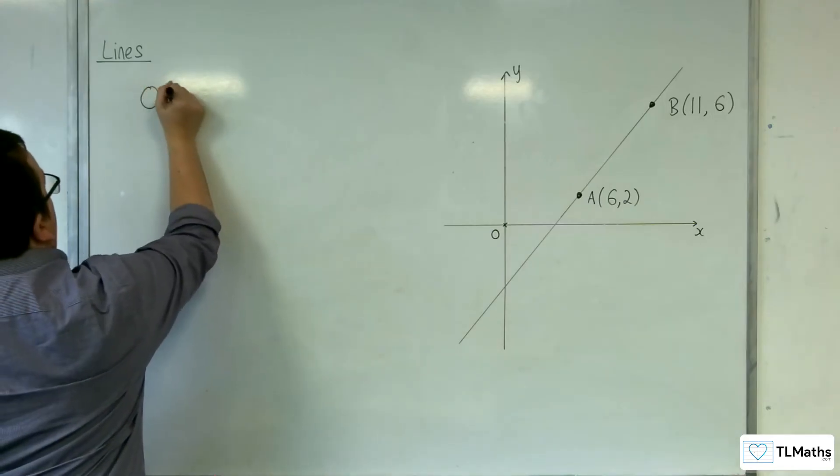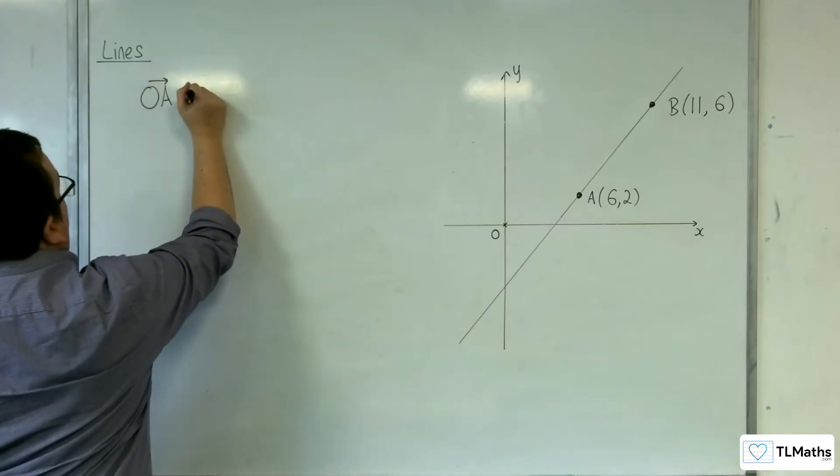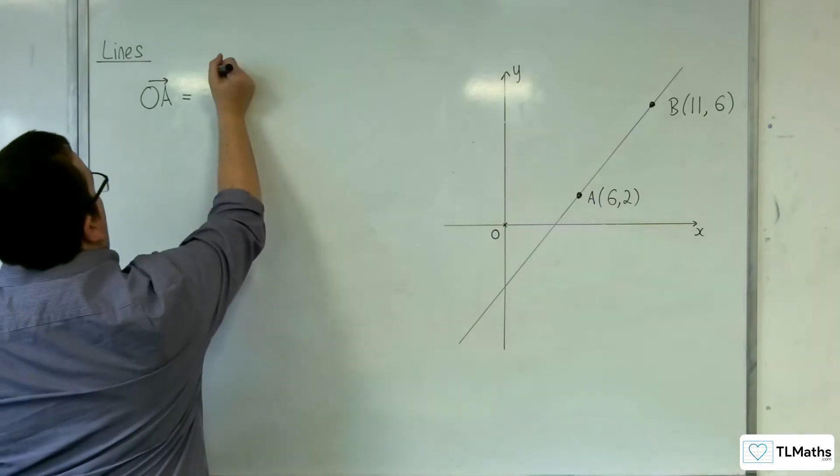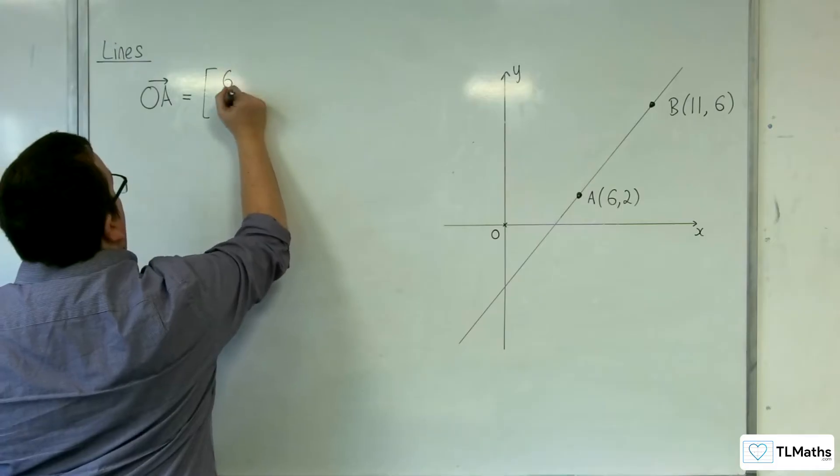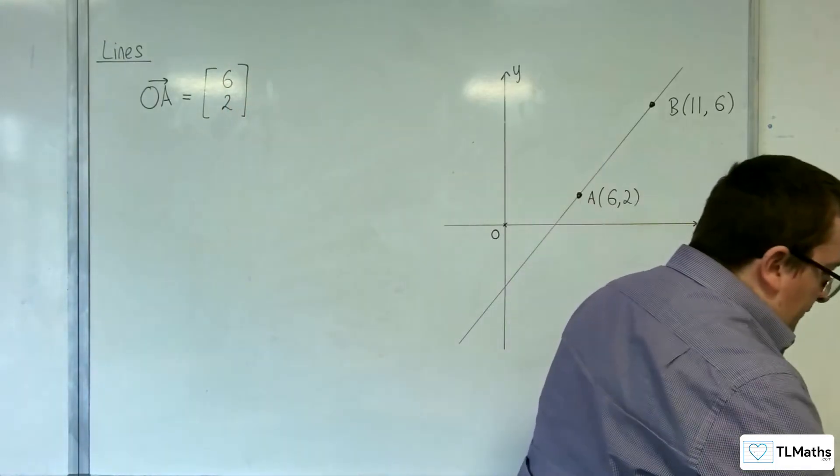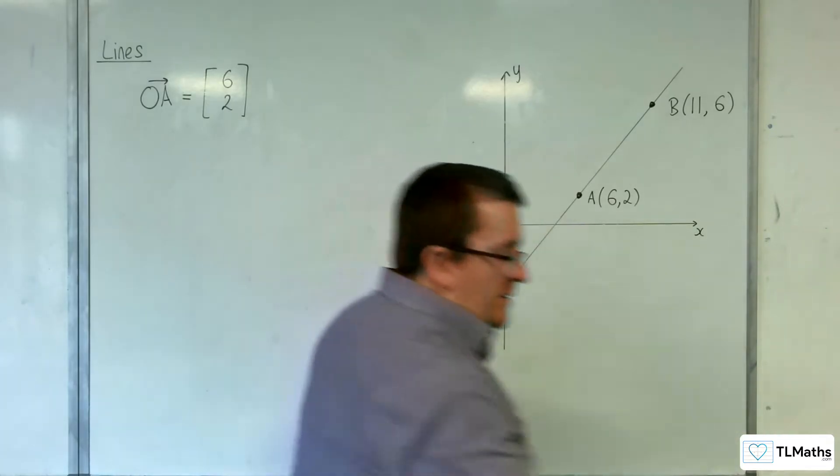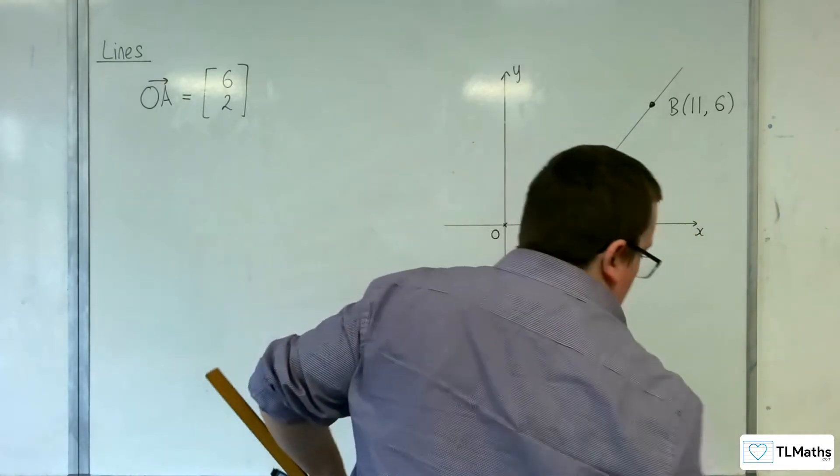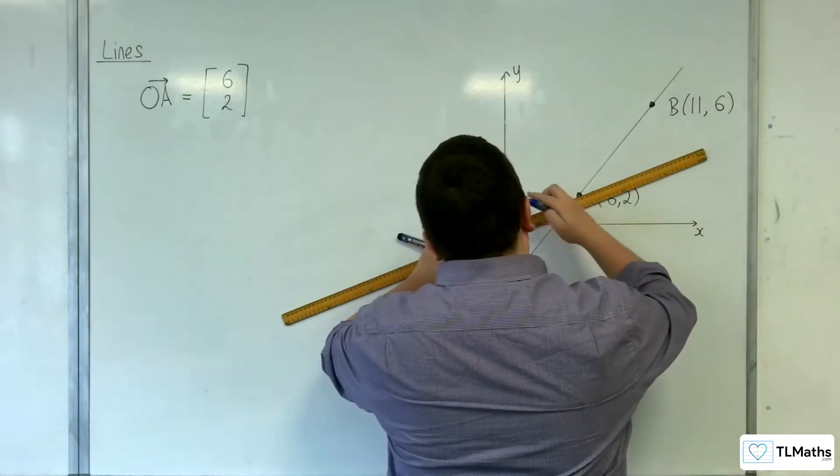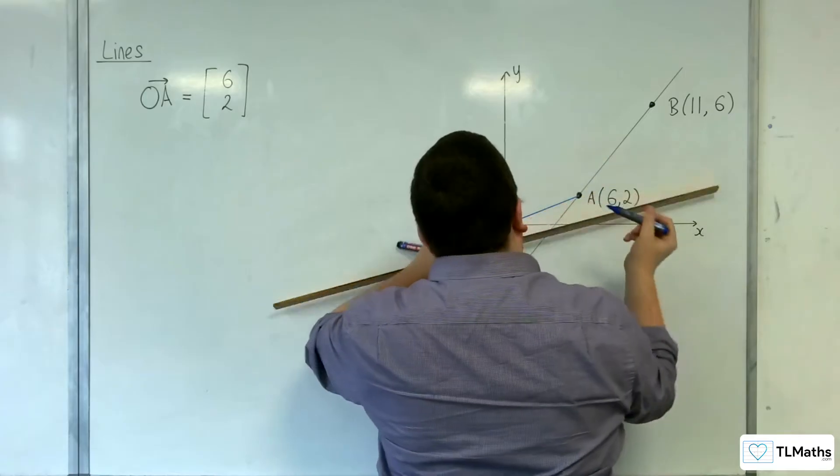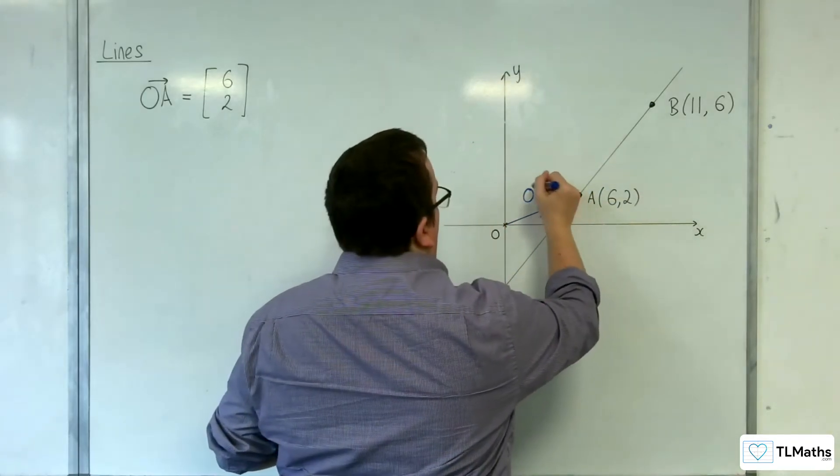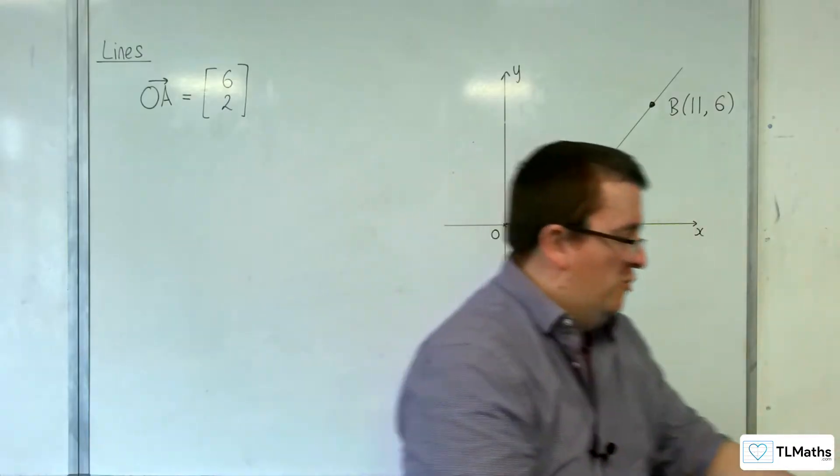So OA, if you remember from A-level maths, that is the position vector of A. So OA would just be (6, 2). That is a vector to get us onto the line. Great, so we've managed to get onto the line, only one specific point mind you, but we're on the line.